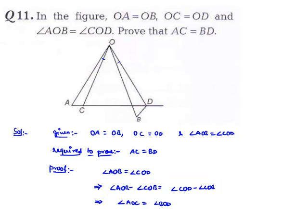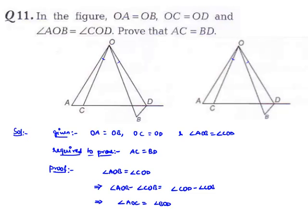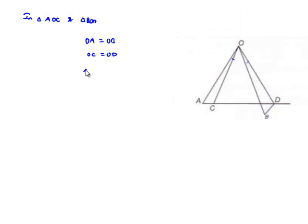Now let us consider both triangles AOC and BOD. It is given that OA is equal to OB and OC is equal to OD, and also angle AOC is equal to angle BOD. We got it above.